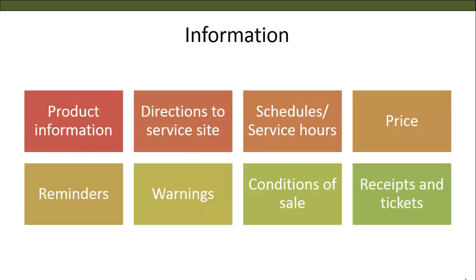Information can be about the product that you have bought in relation to a service. It can be directions about how to move about or where locations are within a service site. It can be about opening hours or the price of the service. Information can also be reminders, like when a dentist sends you a reminder about your next appointment, or warnings, like how you should or should not use medication received from a doctor. Information can be about conditions of sale, like no refund if you don't use part of a package for hair styling, or it can be shown on a receipt or ticket. Companies need to ensure that the information they provide is timely and accurate.